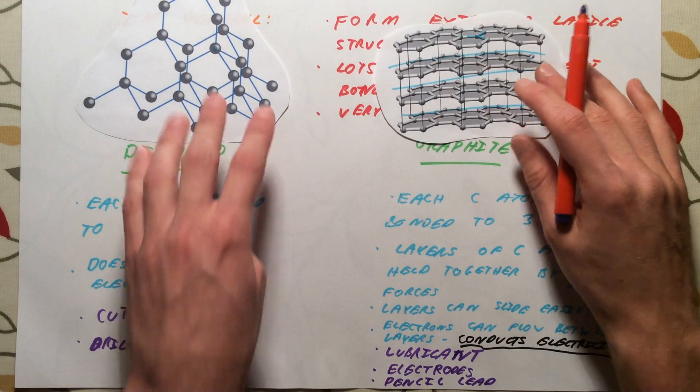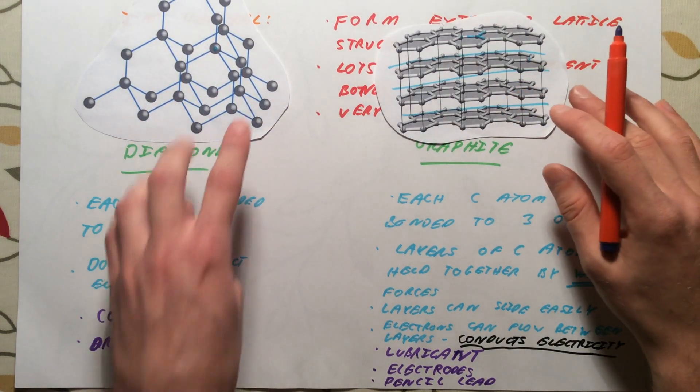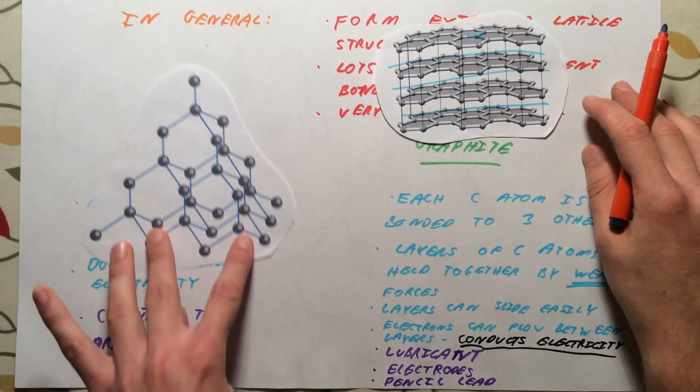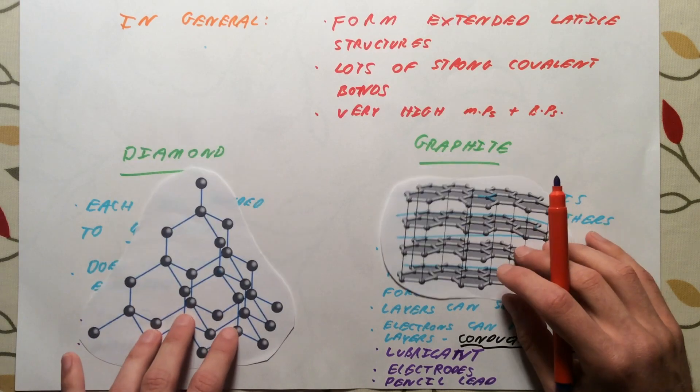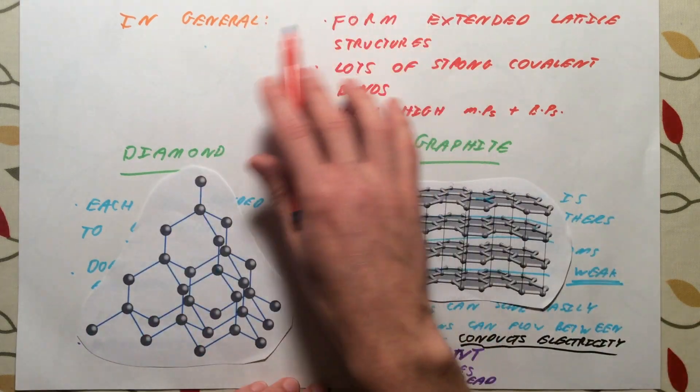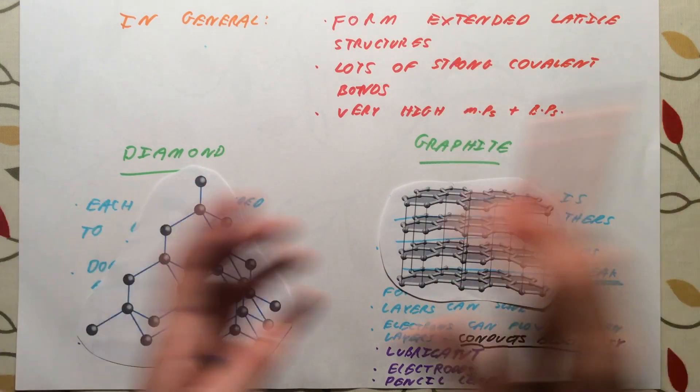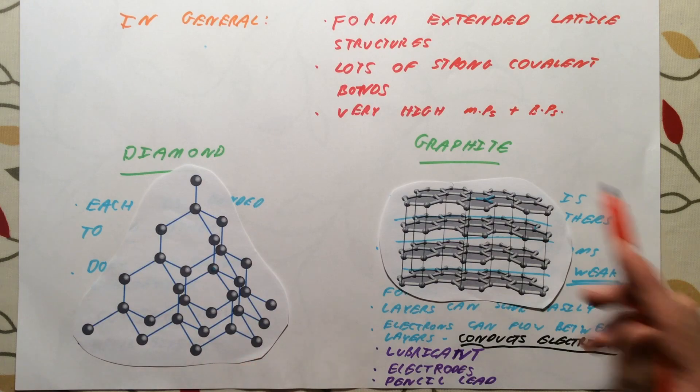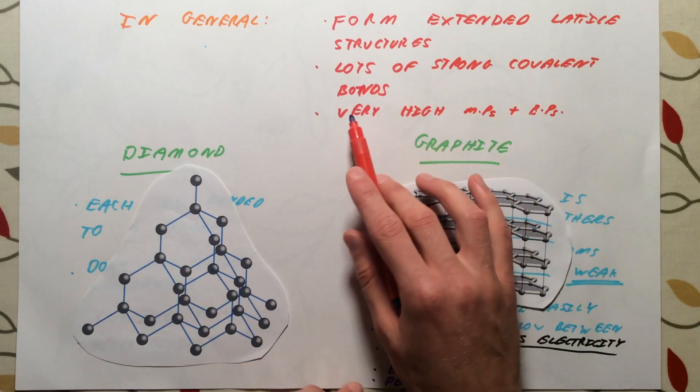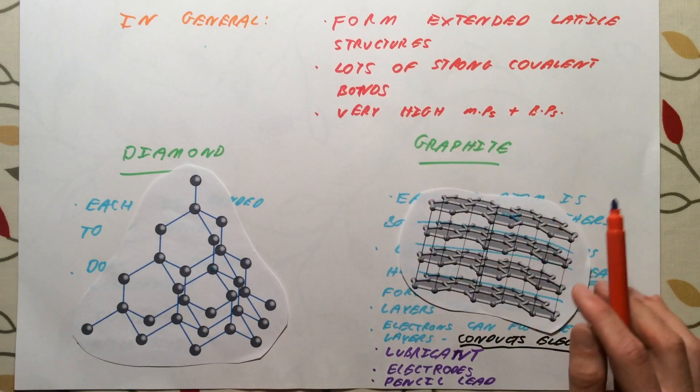So a lot of properties here for you to remember. Make sure you do look over this again and write them out without using this and see if you can remember them all. For foundation, in general, giant covalent structures have extended lattice structures where the atoms will bond continually onto further atoms. So we don't have molecules, we've just got one large extended structure. It's got lots of strong covalent bonds which require a lot of energy to break. Therefore they've got very high melting boiling points.